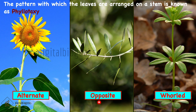In opposite phyllotaxy, one leaf arises from each node and the leaves are arranged opposite to one another on both sides of the stem — for example, olive leaves. In whorled phyllotaxy, leaves are arranged in a circular pattern around the stem, with more than two leaves arising at each node — for example, Alstonia and wall mist.